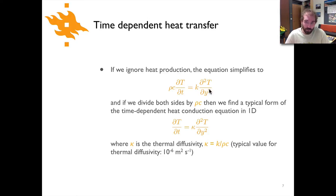And if we divide both sides by rho c we can end up with the typical form of the time dependent heat conduction equation where we have dT/dt equals kappa times the second derivative of temperature with respect to depth. Kappa is called the thermal diffusivity and it's simply the thermal conductivity divided by rho divided by c.